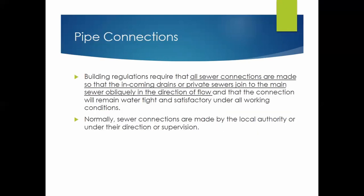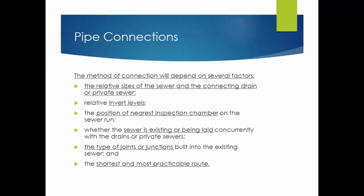All sewer connections are made so that the incoming drains or private sewers join the main sewer obliquely in the direction of flow — it should join with the flow, not against it, and there is a correct angle for that. The method of connection depends on the relative sizes of the sewers, the invert level, the position of the nearest inspection chambers, whether the sewer is existing or being laid, the type of joints or junctions, and the shortest and most practicable route.